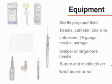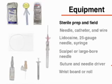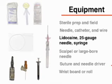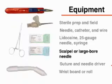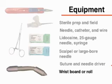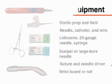For both procedures, similar equipment will be used: material for a sterile prep and a sterile field, a needle, catheter and wire, 1% lidocaine, a 25-gauge needle and 1cc syringe, a larger bore needle or scalpel, suture and needle driver, and a wrist board or roll.